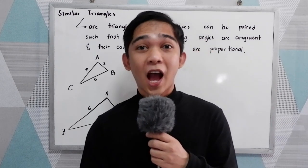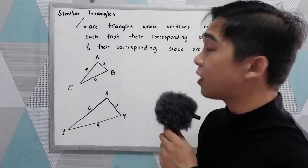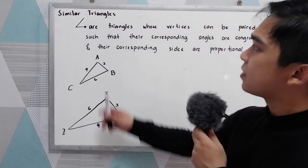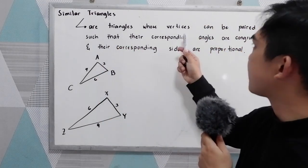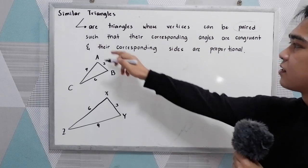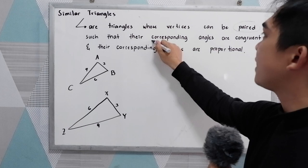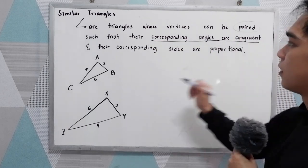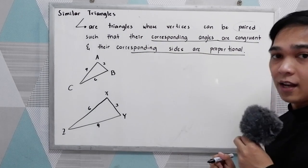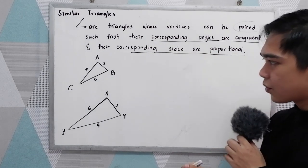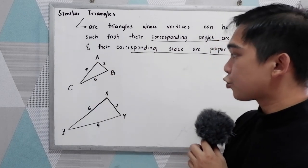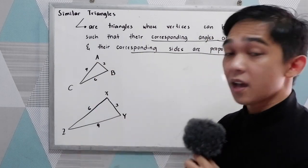Good day everyone! Today I will be discussing similar triangles. When we say similar triangles, these are triangles whose vertices can be paired such that their corresponding angles are congruent and their corresponding sides are proportional. Let's use triangle ABC and triangle XYZ as our example.